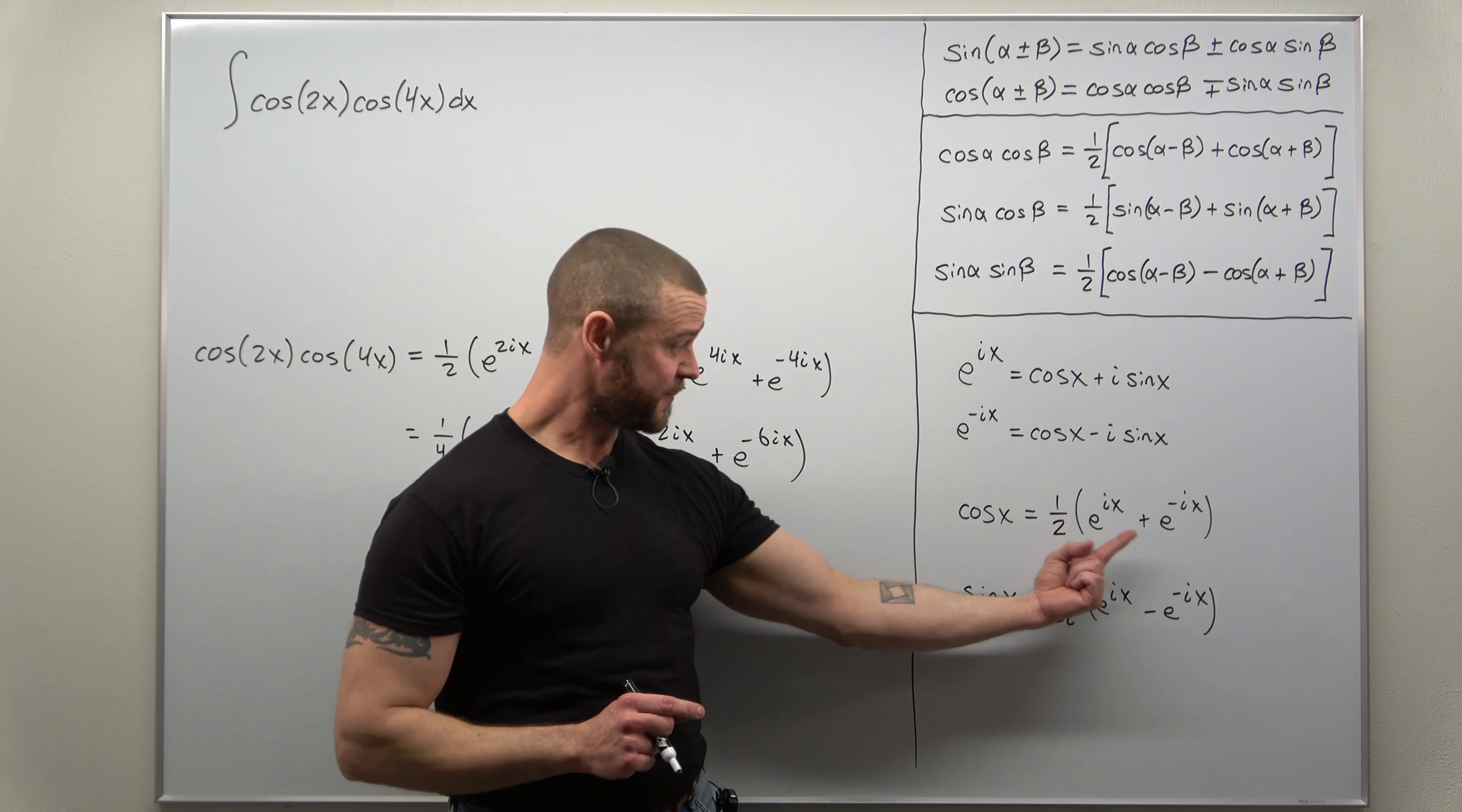I'll move these together, just put them right next to each other, e to the 6ix plus e to the negative 6ix. These are already together. If you want, switch the order since the identity here has the positive exponent before the negative exponent. Technically it doesn't matter, but since many of you are maybe coming out of your calc 2 course, I'll just include those steps. Write that as e to the 2ix plus e to the negative 2ix.